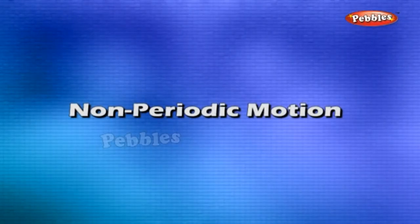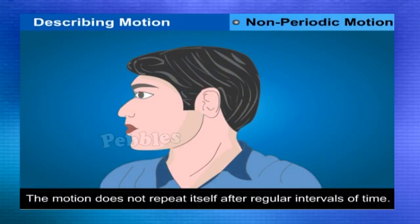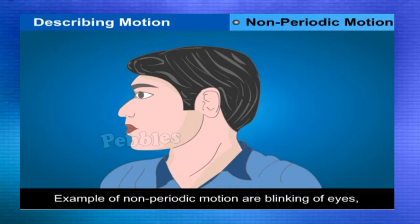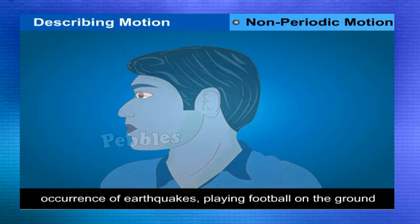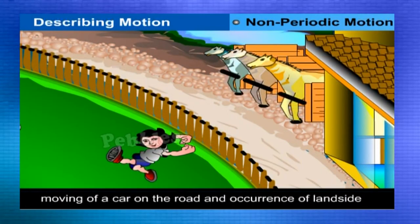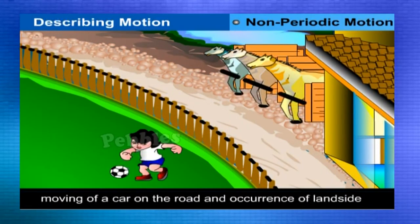Non-periodic motion. In case of a non-periodic motion, the motion does not repeat itself after regular intervals of time. Examples of non-periodic motion are blinking of eyes, occurrence of earthquakes, playing a football on the ground, moving a car on the road, and occurrence of a landslide.